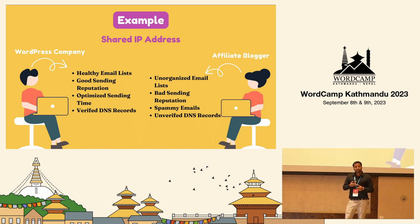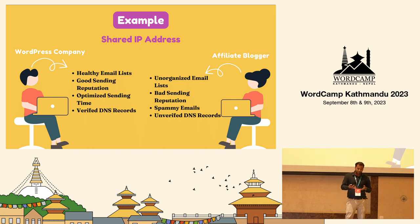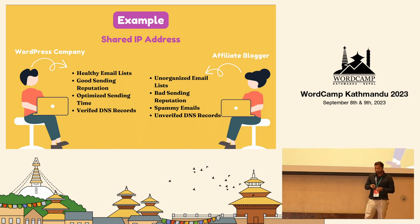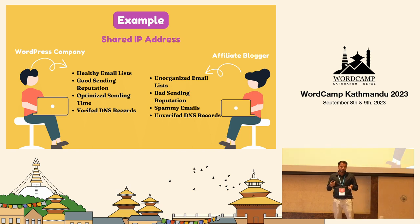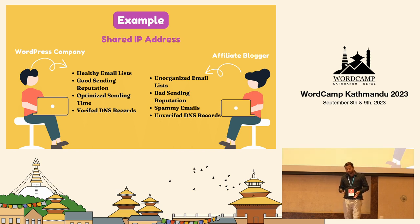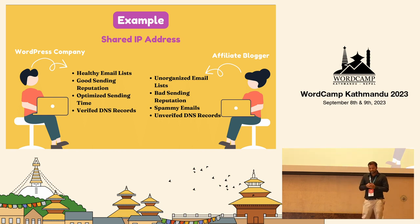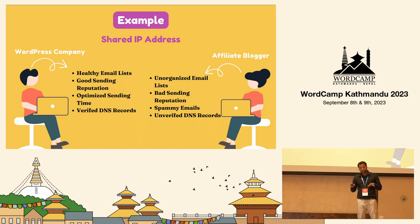The WordPress company has a very healthy email list, a good sending reputation, has optimized the sending time, and has verified DNS records. On the other hand, the affiliate blogger is running the campaign from the same IP but has an unorganized list, bad sending reputation, a record of spammy emails in the past, and unverified DNS records. Now, what happens when these two companies launch their campaign at the same time?